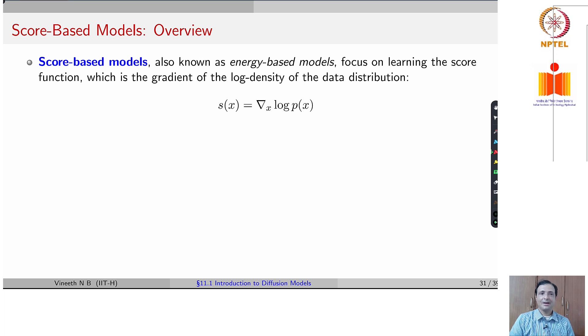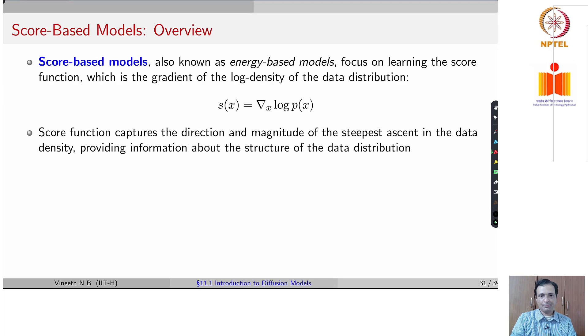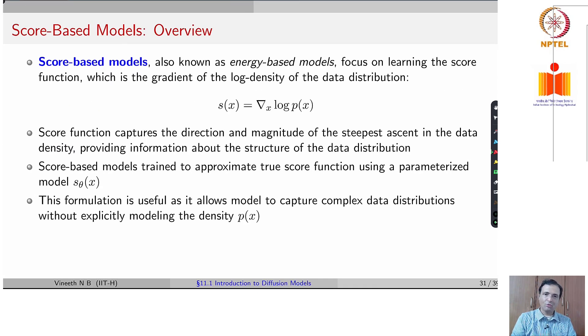A slight deviation here in trying to understand diffusion models or DDPMs in a different way is through an alternate approach for generations, which are score based models. Score based models have been used in the past for learning a score function, which is the gradient of the log density of your data distribution. For example, s of x can be written as gradient over x log of px. This tells us how close we are to the original data distribution. This score function here captures the direction and magnitude of the steepest ascent in the data density. These score based models have been used for training generative models.